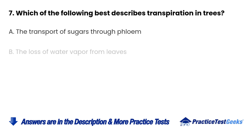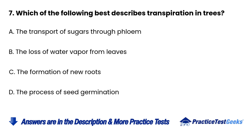Question 7: Which of the following best describes transpiration in trees? a. The transport of sugars through phloem. b. The loss of water vapor from leaves. c. The formation of new roots. d. The process of seed germination.